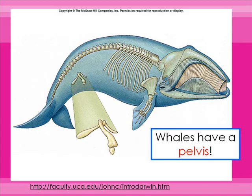Another great example of a vestigial structure is that whales have a pelvis — totally vestigial. A pelvis is used for walking, and whales don't walk. These pieces of bone used to once be useful for the whale's ancestors, and now they just kind of float around, stuck in the cartilage and muscle of a whale's body.